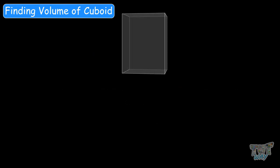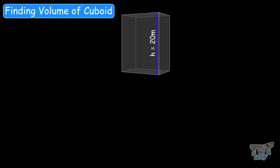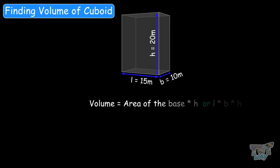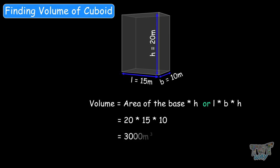Next, another cuboid with height of 20 meters, length of 15 meters, and breadth of 10 meters. So what will be the volume? It will be area of the base multiplied by height: 20 times 15 times 10, which equals 3,000 meters cubed.